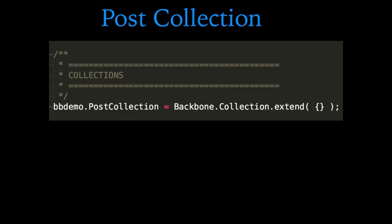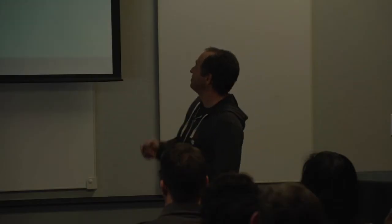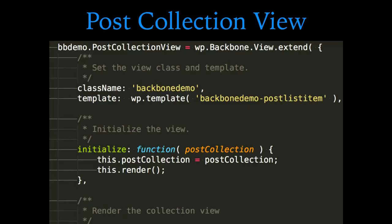Here's the collection — there's nothing to it, just a default collection with no code. Here's the collection view — the view that represents the list of post titles. It has a little more sophistication: it has its template, which we just looked at, and its collection, which we pass through on initialize. The render function goes through each model in the collection — this is like an Underscore for-each loop — takes that model's attributes, templatizes it, and appends it to the $el, which is the special jQuery element attached to each view.